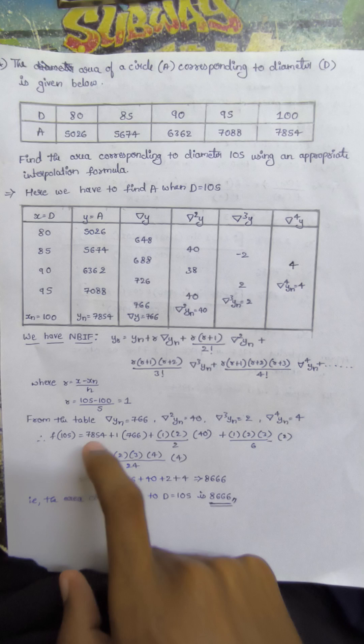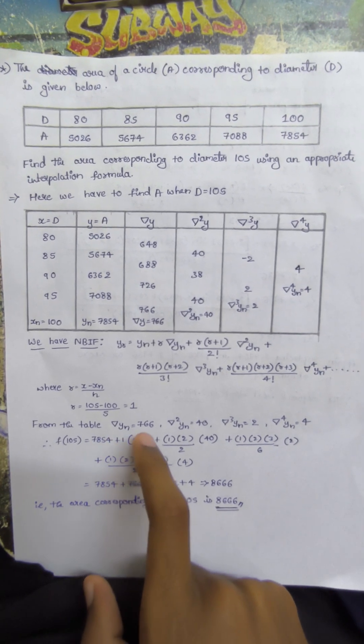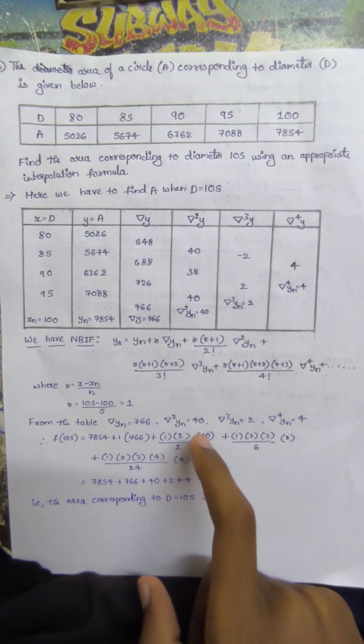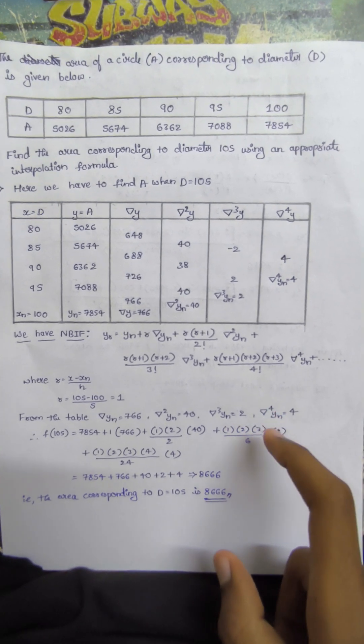Del yn equals 766, del square yn equals 40, del cube yn equals 2, del to the power of 4 yn equals 4.